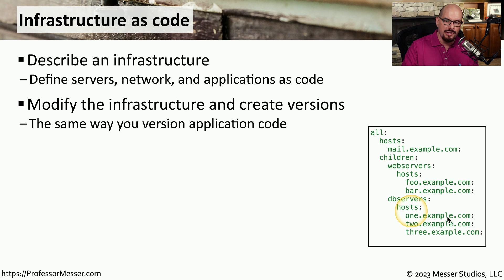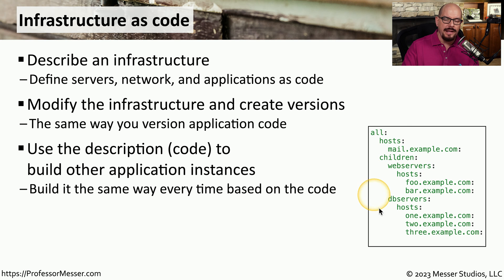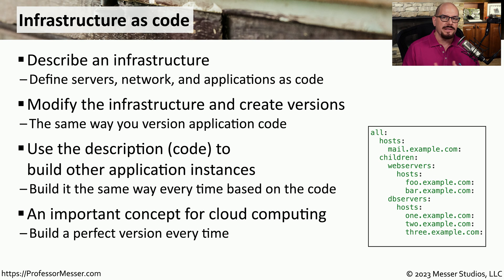You can build changes directly into the code itself, so the next time this code is used to build out the infrastructure, it takes all of your changes into account. Once you've created a perfect version of the application instance, you can easily use that code to rebuild the instance on any cloud provider at any time. This is one of the significant benefits of cloud computing — the ability to create an entire infrastructure all based around one single definition of infrastructure as code.